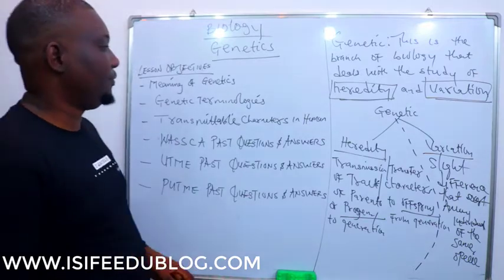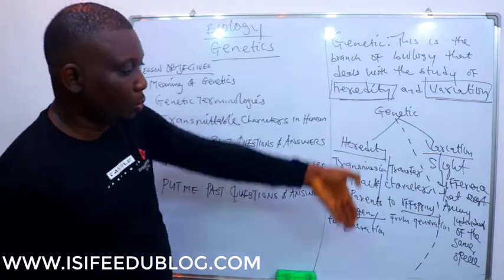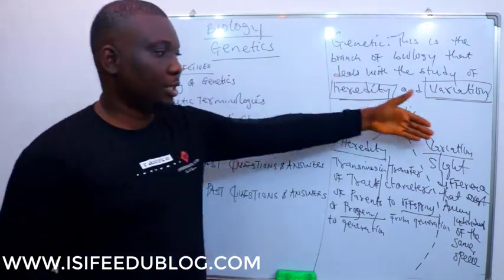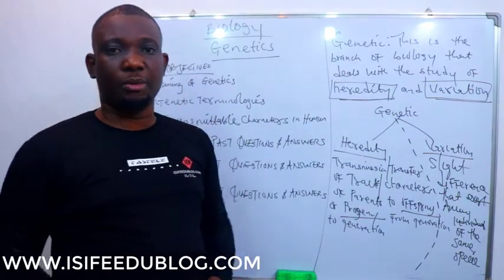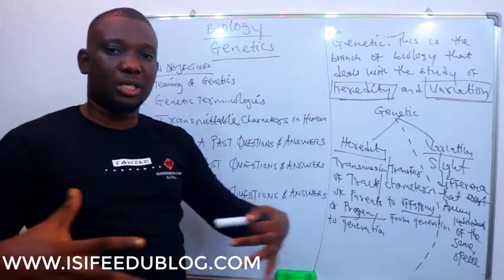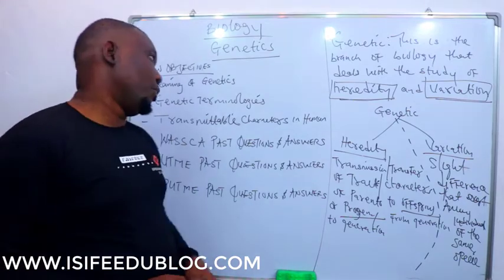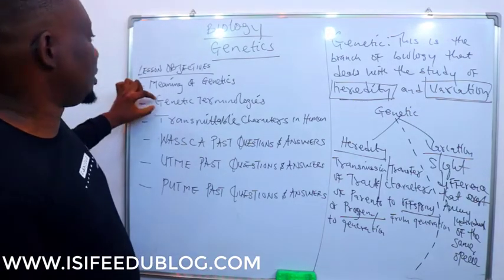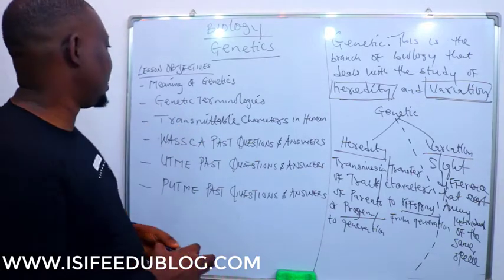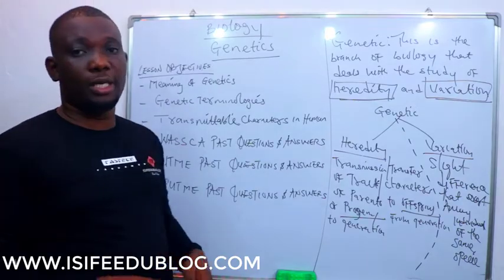In our next objective, before we proceed further, we will dwell more on heredity, and in our next video we will discuss variation further. But let's concentrate on the aspect of genetics that has to do with transmission and transfer of traits or characters from parent to offspring. Our second lesson objective is the terms used in genetics.